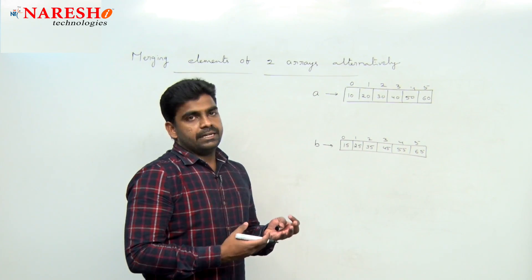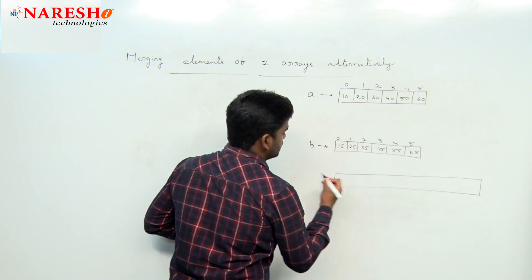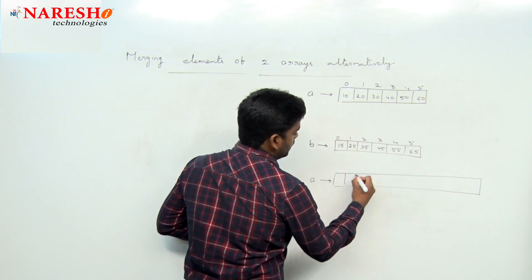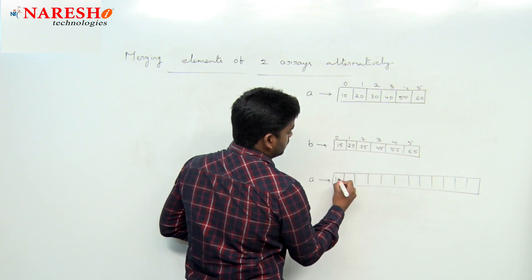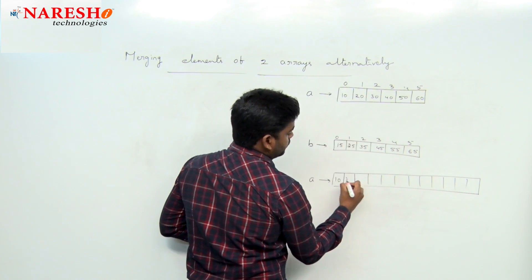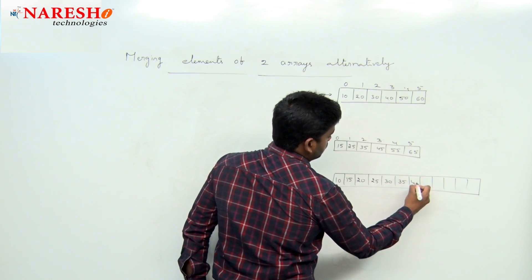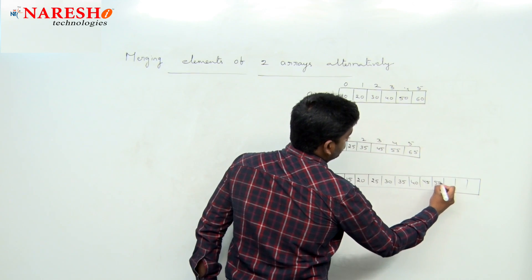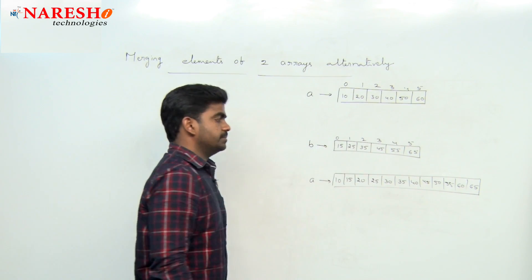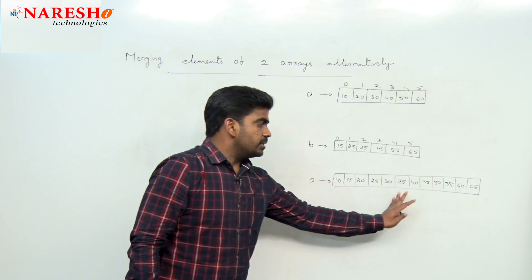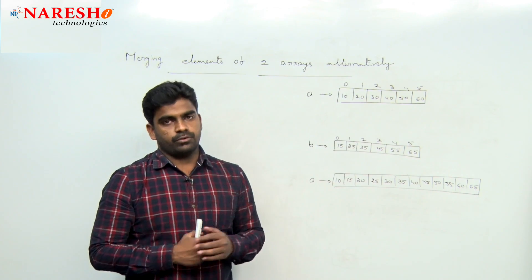The final array 'a' after merging should have elements in alternative locations: 10, 15, 20, 25, 30, 35, 40, 45, 50, 55, 60, 65. So this is after merging. Now, how do we write the logic to perform this?